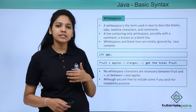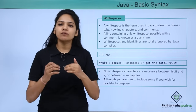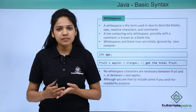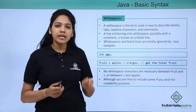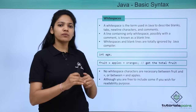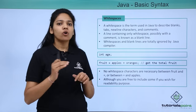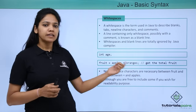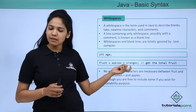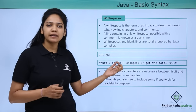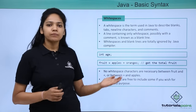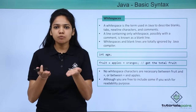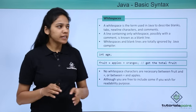Next, what are white spaces? There are certain spaces when we write in a language. A character is a white space if it is a line separator, a paragraph separator, or a space. For example, 'int age' — there is a space between int and age, and this space is ignored by the compiler. Another example: 'fruit = apples + oranges' — there is a space before and after the plus sign, and this space is completely ignored by the compiler.